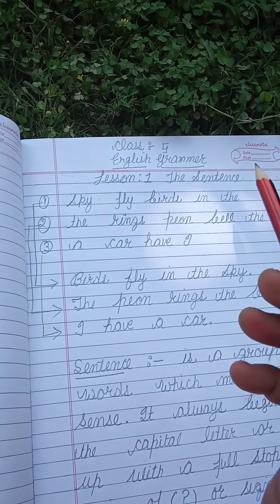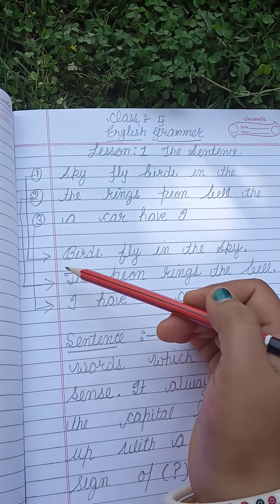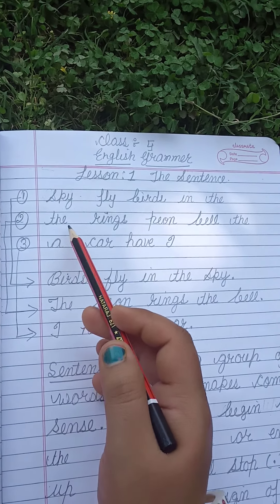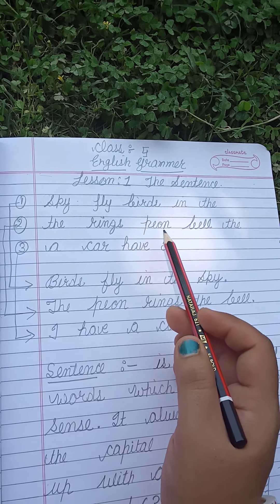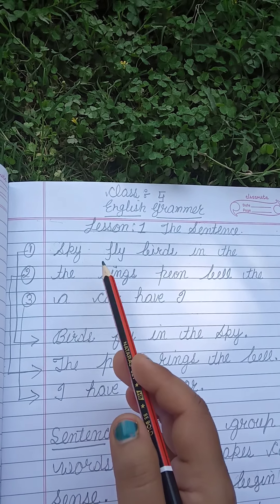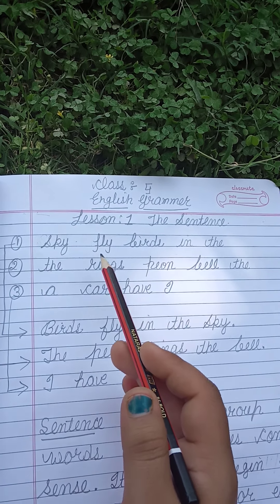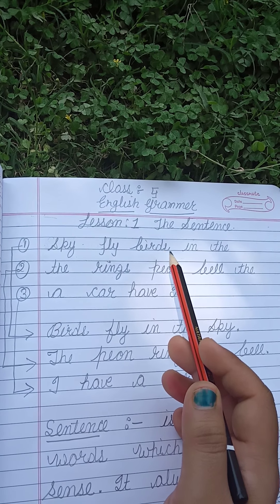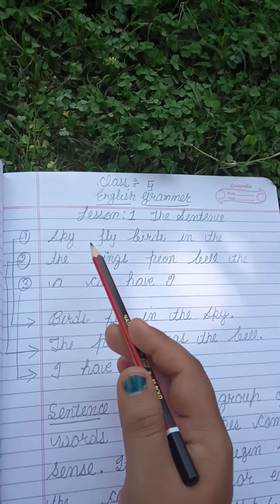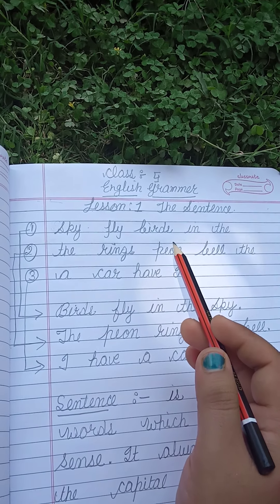First of all, see what is given here. There are some group of words: 'sky fly birds in the,' 'the ring bell the a,' 'car have I.' Is there any sense in these group of words? Kya yaha pe koi meaning ban raha hai, koi sense nikal rahi hai? No, there is no sense in these group of words, so these are not sentences.